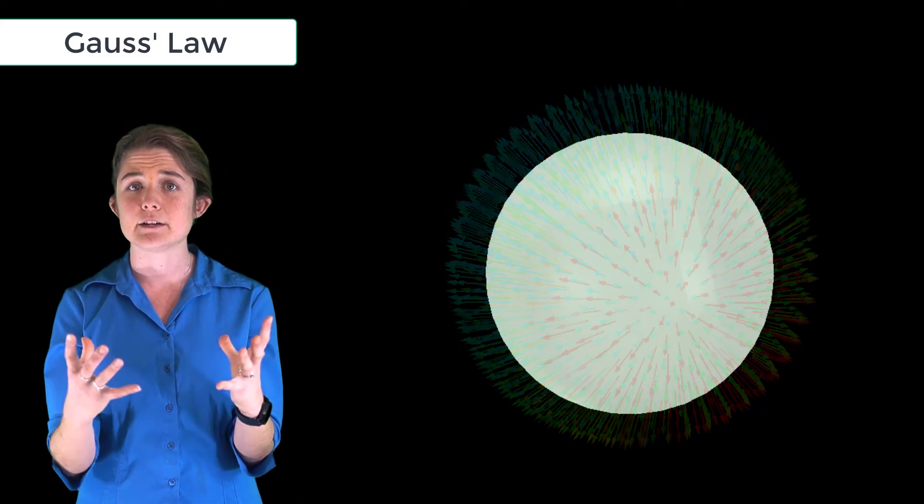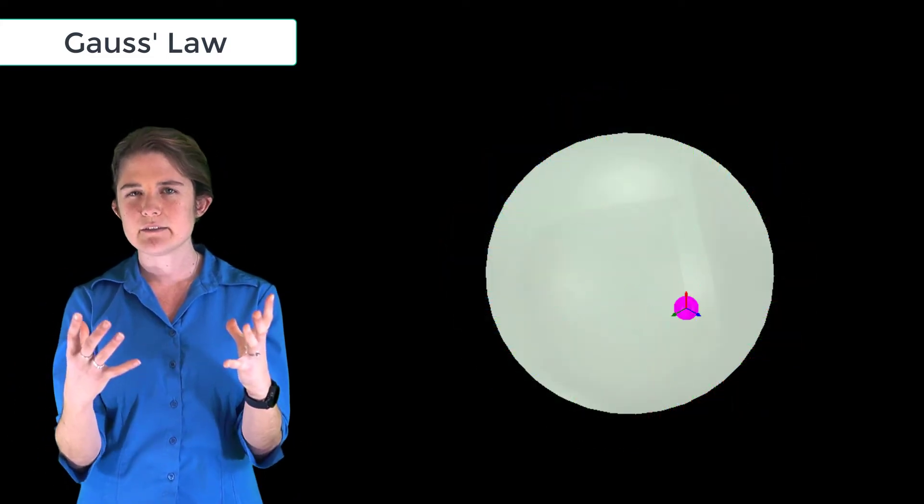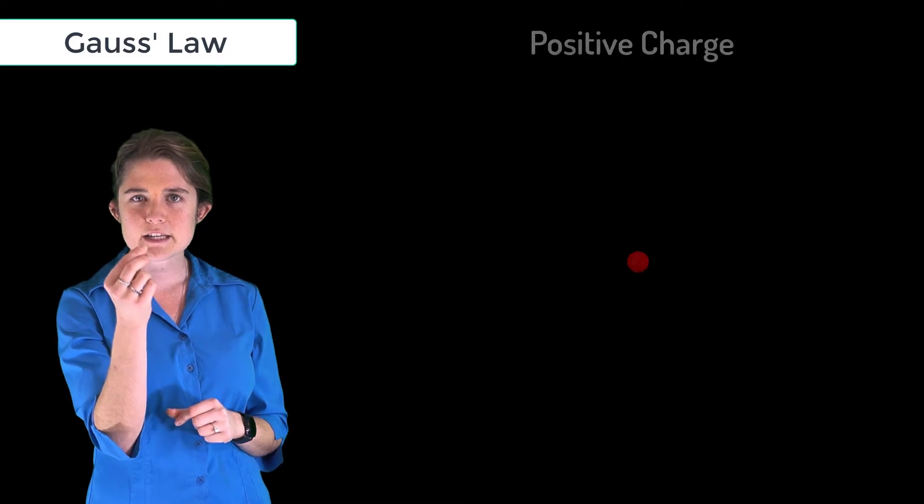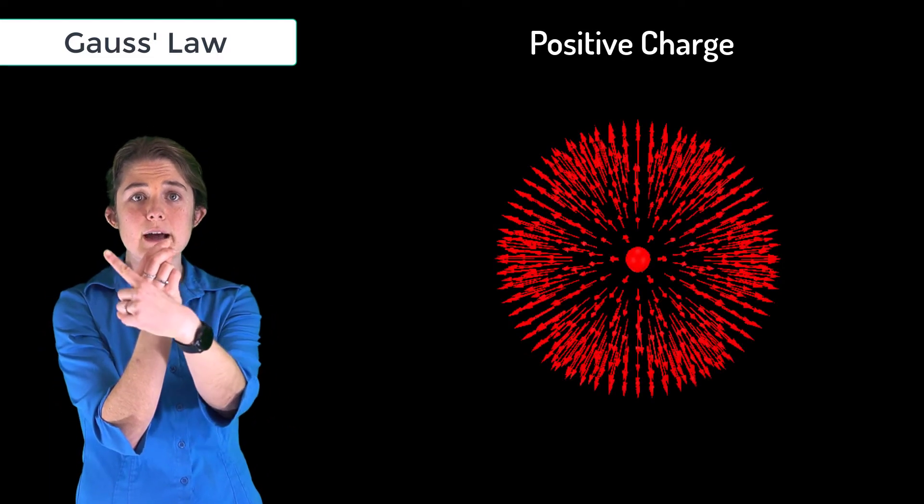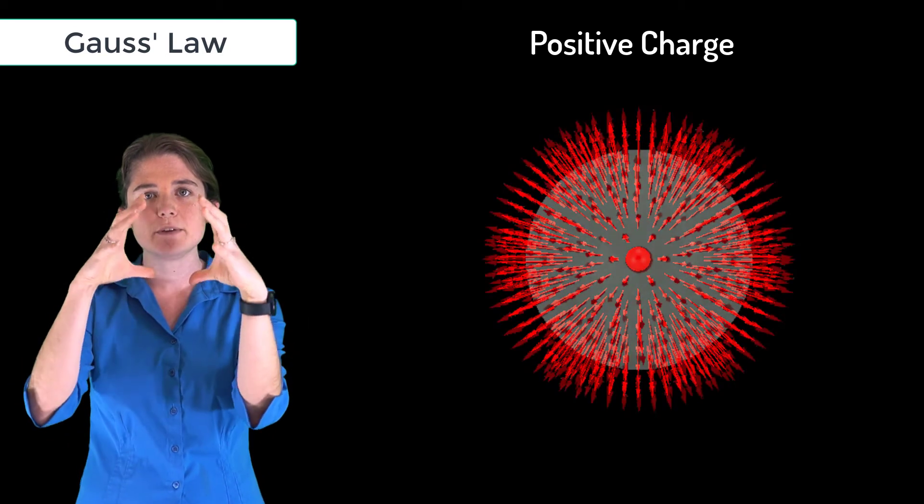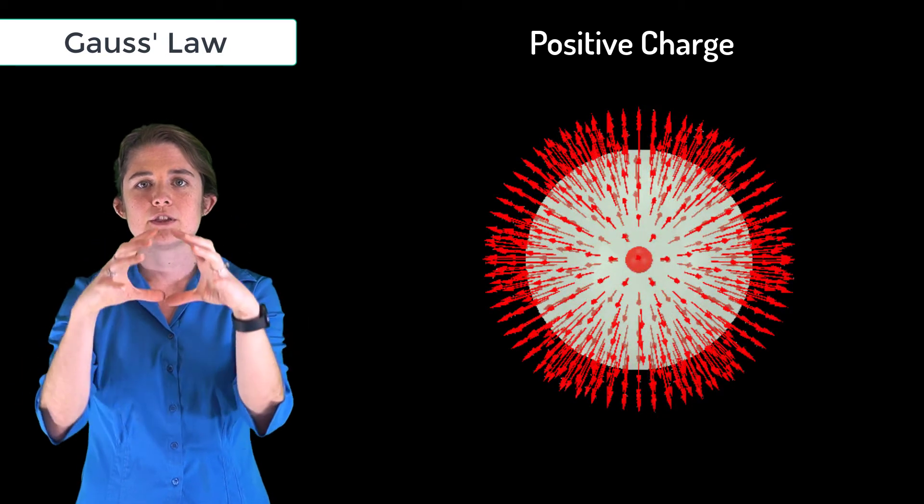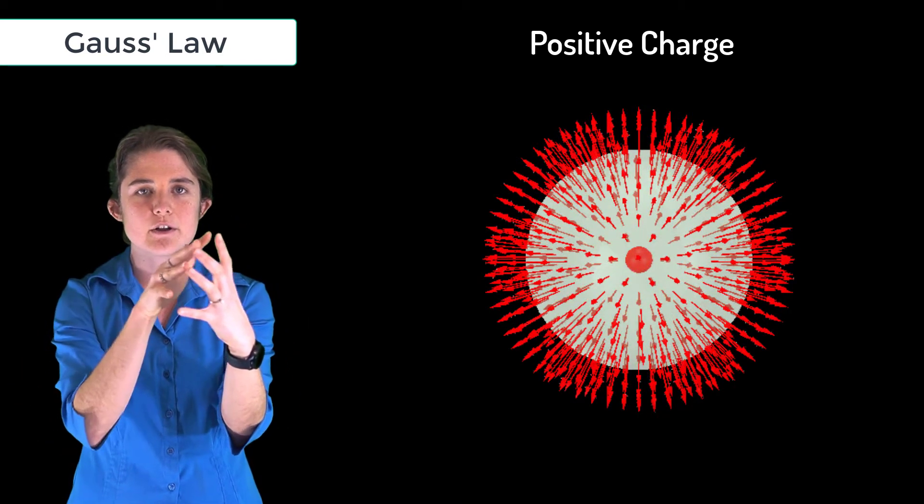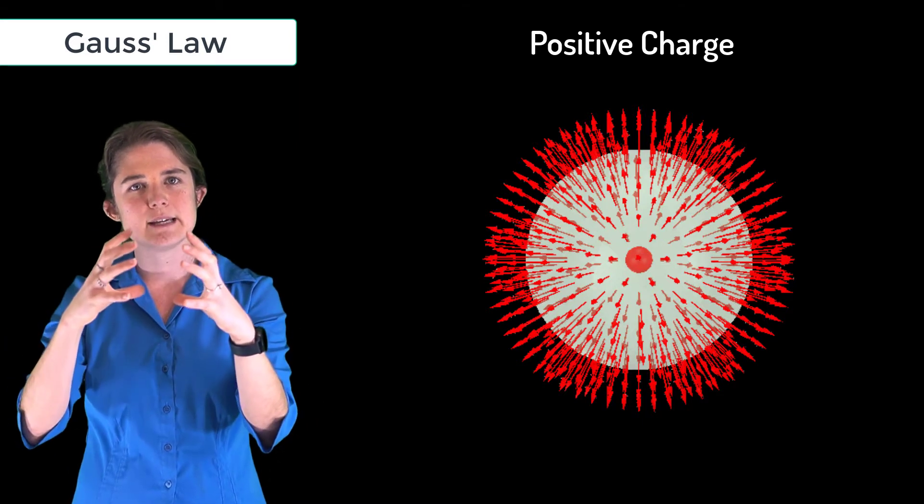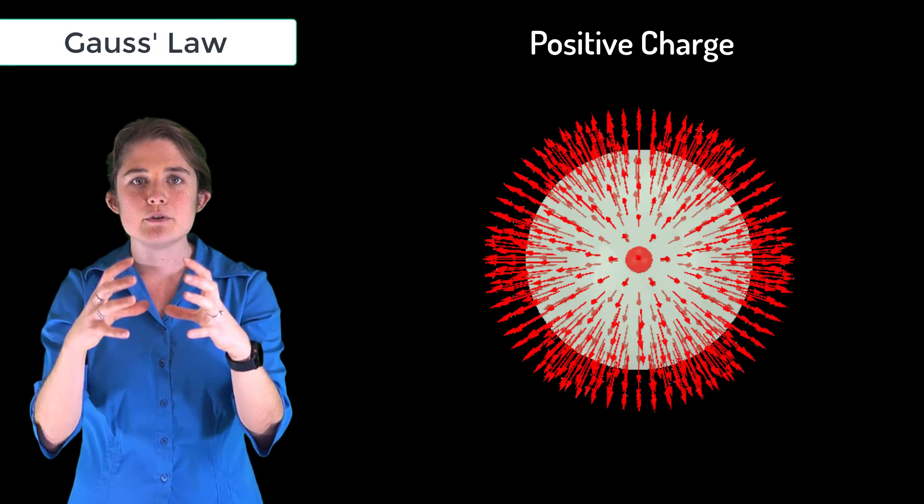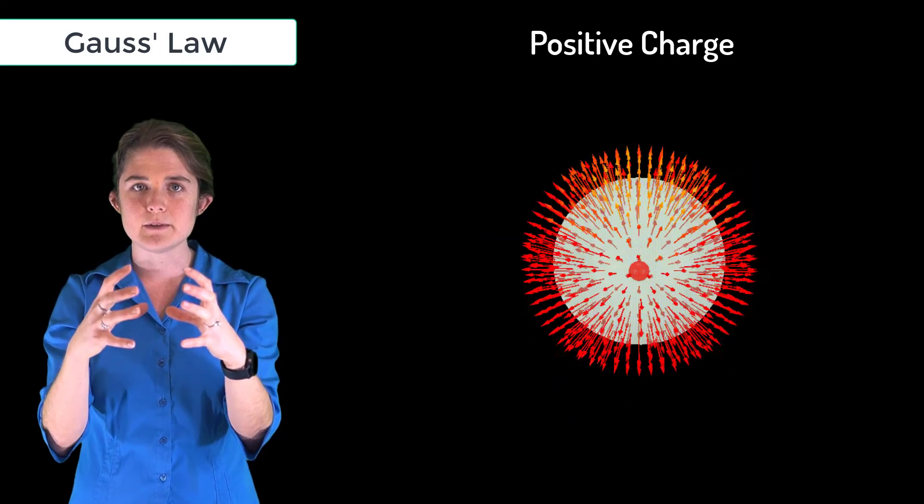Think of it this way: if you have a positive point charge, all its electric field vectors are pointing straight out. If you draw a sphere around that point charge, the surface of the sphere will catch all those outward pointing field vectors. So even if you can't see inside the sphere, you know from seeing those outward pointing field vectors that there's a positive charge in there.